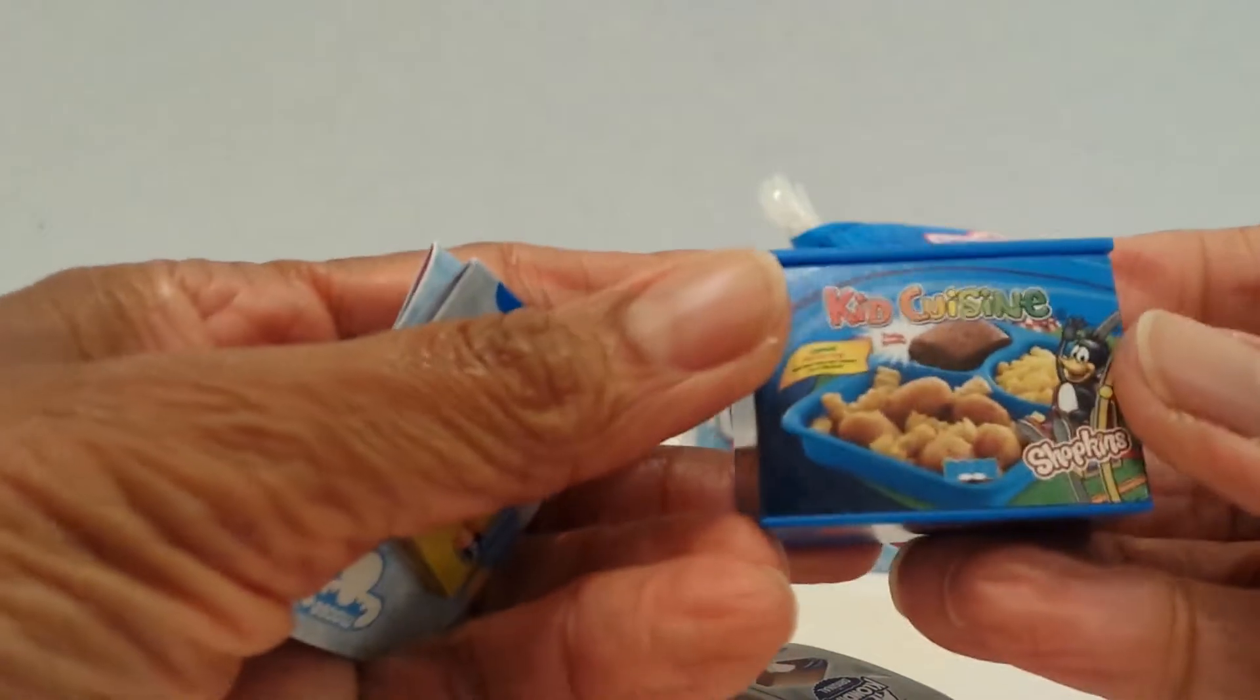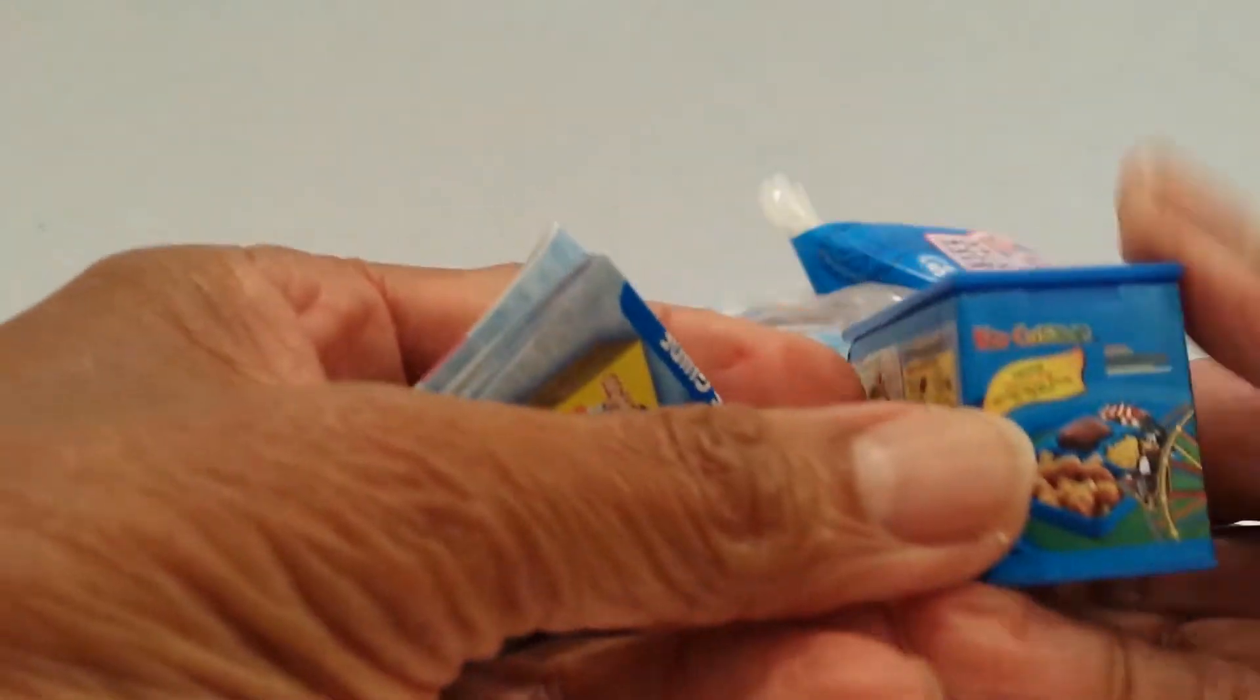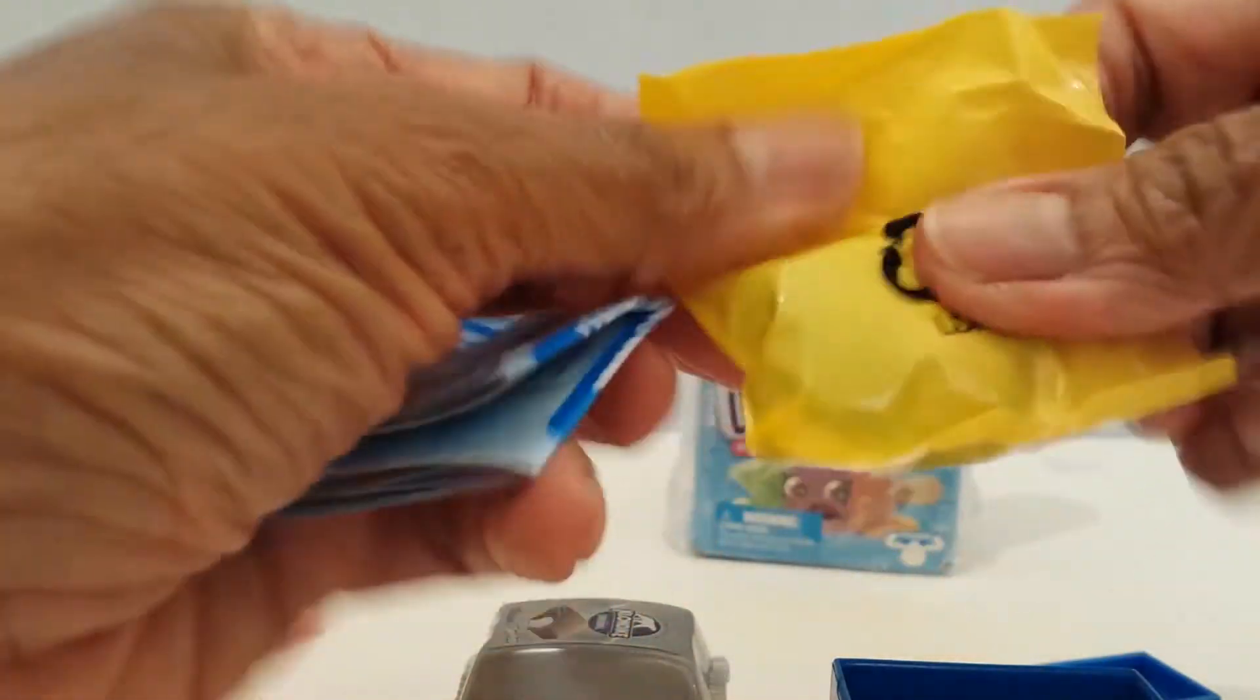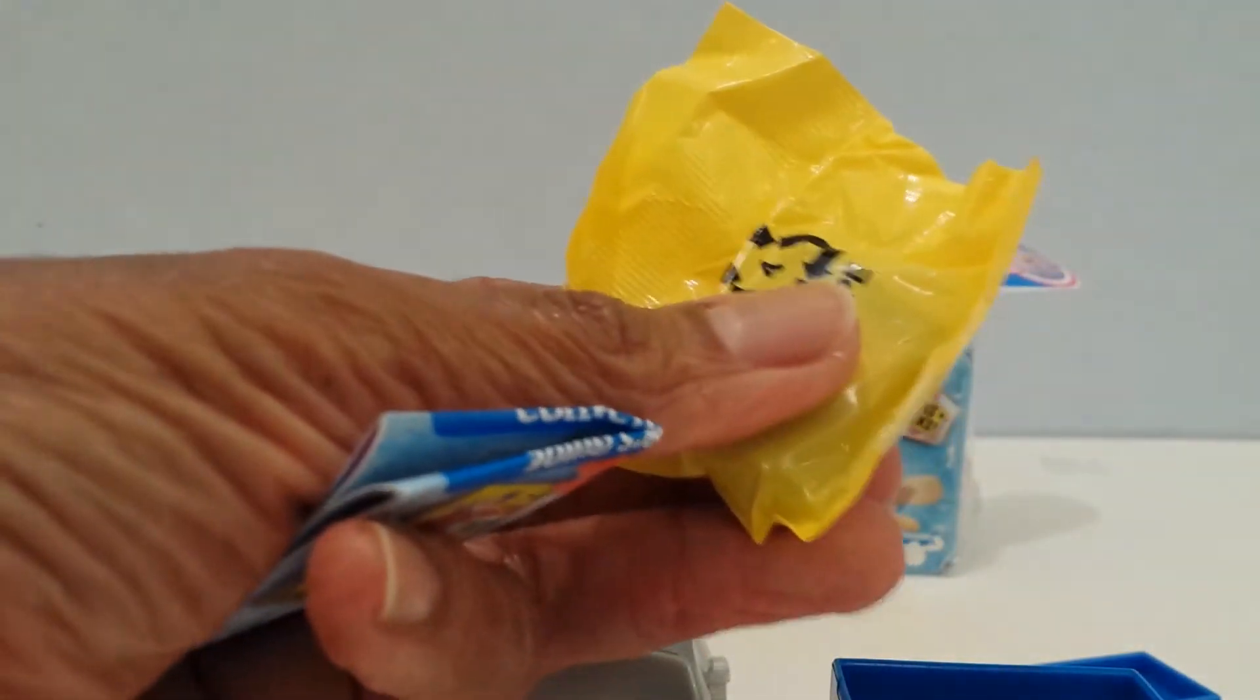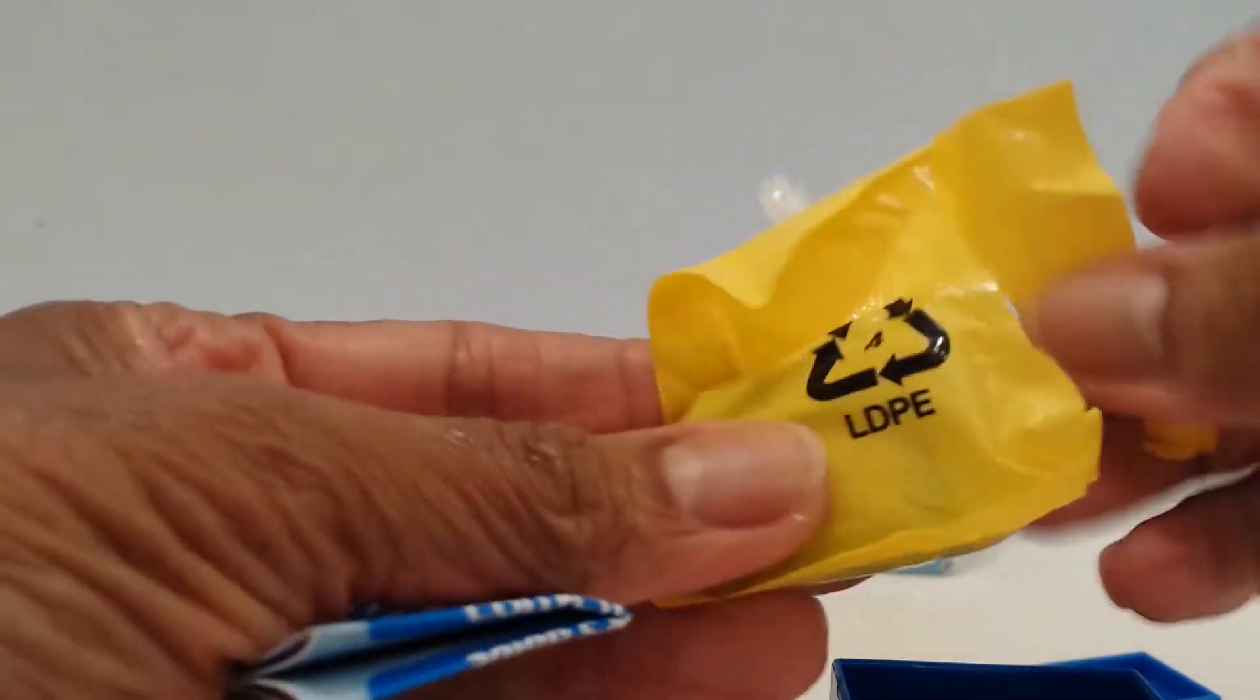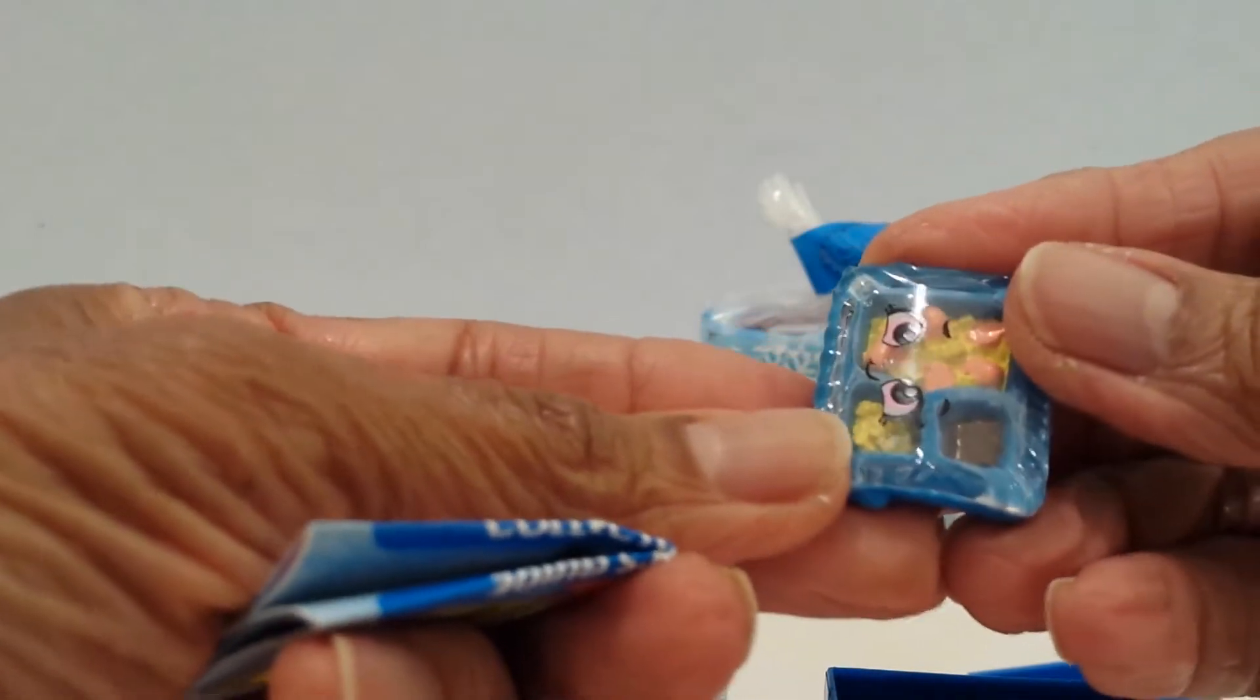Two shopkins. I thought each one opens up. Let me see. Okay, here this right here is Kid Cuisine. I got this before in other ones. This I know opens, and here's the little food item.